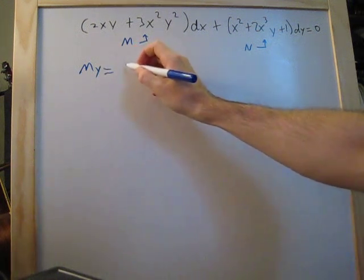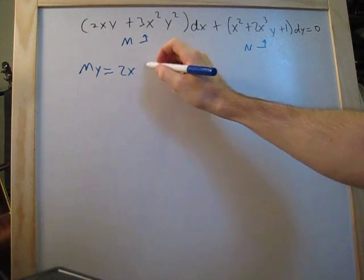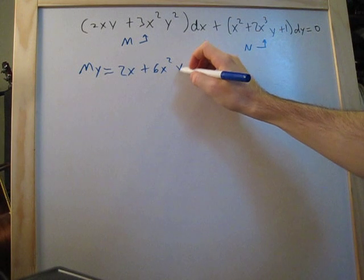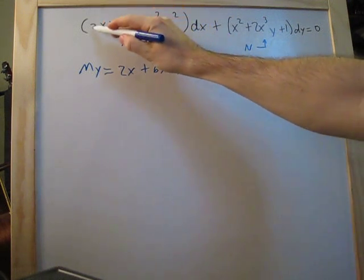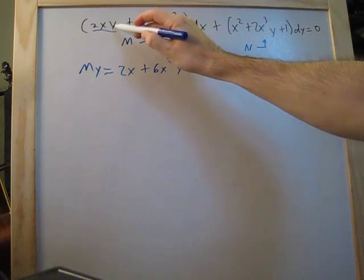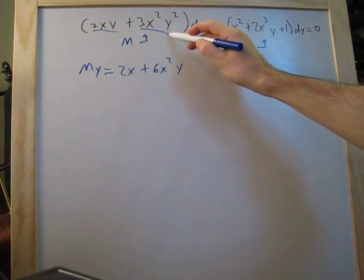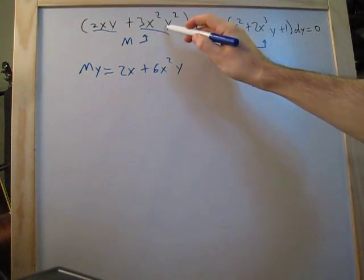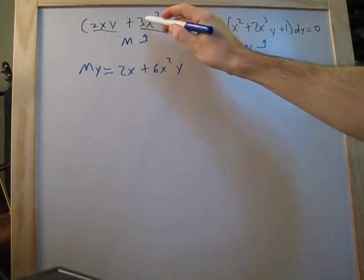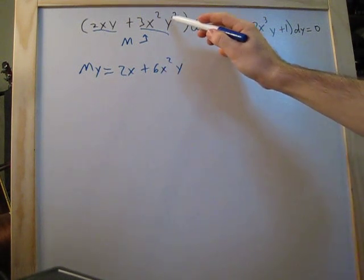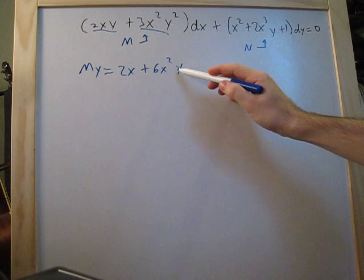So M_y is going to be 2x plus 6x²y. When we take the derivative with respect to y of the first section, the y drops out. When we do it with respect to the second section, the y² drops down to 2y, and the 2 multiplies times the 3 to give us 6, so y² becomes just y.